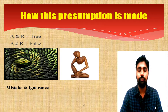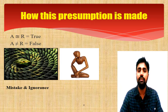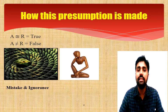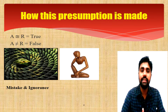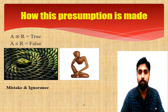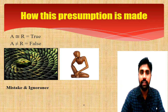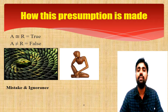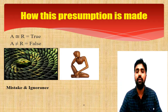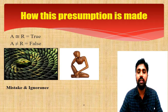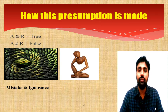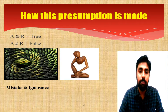A live example: Aapke ghar mein koi rassi padi hui hai — you have a rope in your house — and in dim light you thought it was a snake. It appeared to be a snake but it is a rope. Appearance is not equal to reality — therefore it is a false assumption. Similarly, agar aapne raat mein kisi bade se ped ko dekha aur aapko laga ki yeh koi insaan ya ghost hai — here appearance is not equal to reality, and therefore it is a mistake of fact.